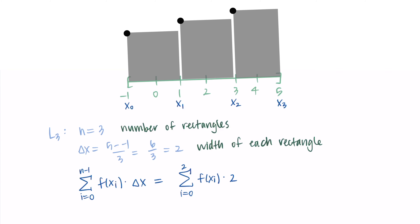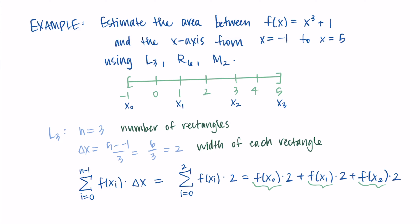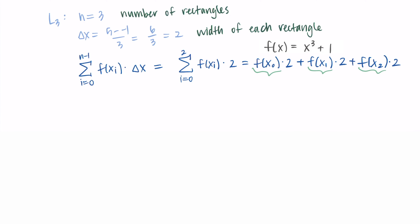Written out, starting at i = 0 I get f(x₀)·2, then i = 1 gives f(x₁)·2, then i = 2 gives f(x₂)·2. This confirms we're using x₀, x₁, and x₂ as expected — the leftmost points. Now I'll use the function f(x) = x³ + 1 to find the value at each of these points. Our three x values are x₀ = -1, x₁ = 1, and x₂ = 3.